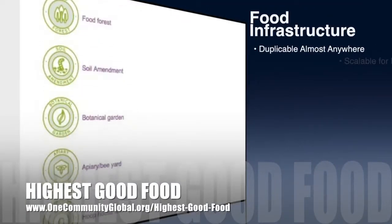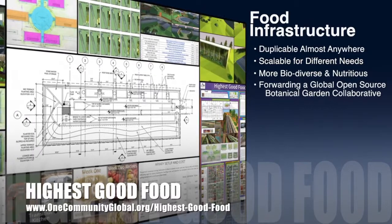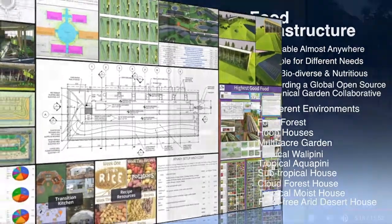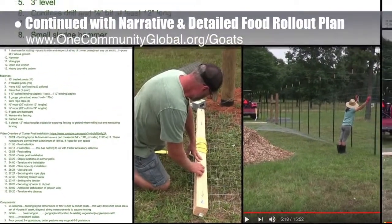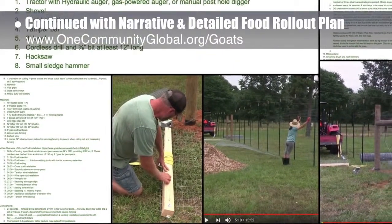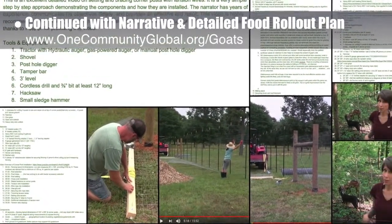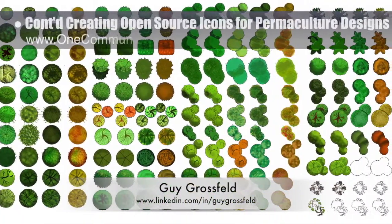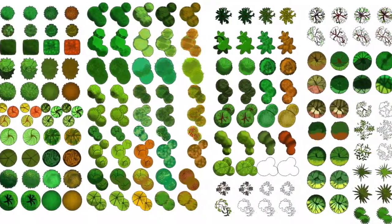One Community's approach to highest good food is duplicable almost anywhere, scalable for different needs, more biodiverse and nutritious, part of forwarding a global open source botanical garden collaborative, and includes nine different free shared and duplicable growing environments. This week the core team continued writing the behind-the-scenes narrative in the detailed food rollout plan, watched videos on goat care and fencing, created an initial drawing for the goat pen size, and organized related equipment, materials, and information into an implementation timeline. Guy Grossfeld, graphic designer, completed his eighth week creating an open source icon and symbol set for permaculture designs.